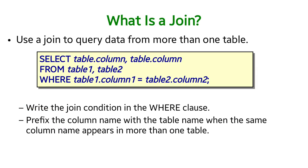Now we enter into the join query. To retrieve data from more than one table, this is the syntax: SELECT table.column, table.column FROM table1, table2 WHERE table1.column1 = table2.column2. This is the general syntax for a join operation — write the join condition in the where clause and prefix the column name with the table name when the same column name appears in more than one table, using the dot operator.